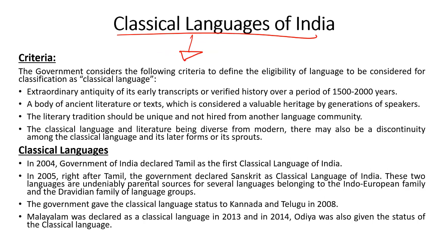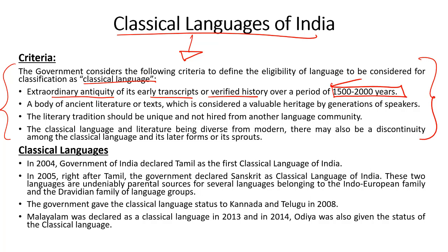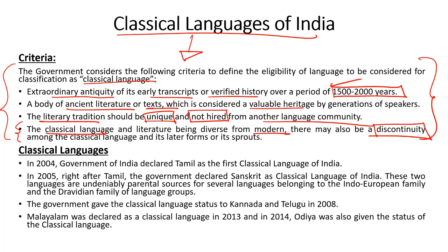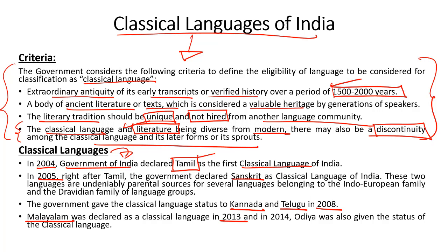The government accords the classical language status to a particular language based on its ability to fulfil certain criteria. The language should be of extraordinary antiquity and its earliest transcripts and inscriptions should date back to at least 1500 to 2000 years ago. There should also be a vast body of ancient literature and texts considered as valuable heritage, and it should have a literary tradition that is unique to itself and not drawn directly from another language community. Since a classical language has to be distinct from modern language, there has to be a clear discontinuity in the different forms of the language. Based on these criteria, in 2004 the government of India accorded the classical language status to Tamil, followed by Sanskrit in 2005, Kannada and Telugu in 2008, Malayalam in 2013, and Odiya in 2014.